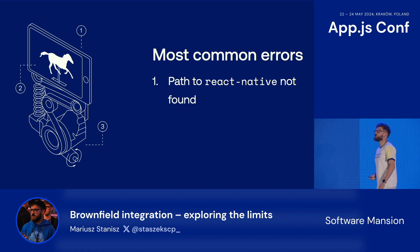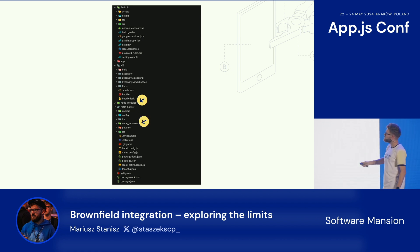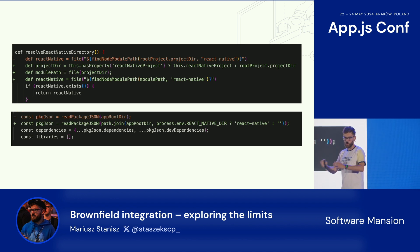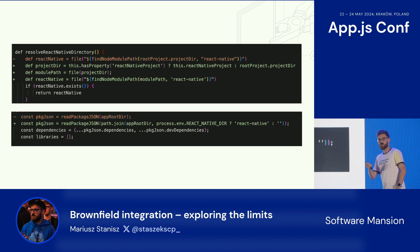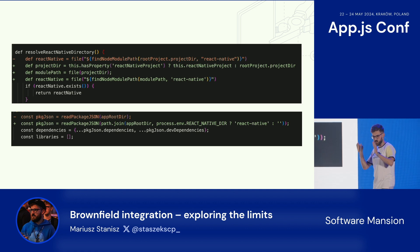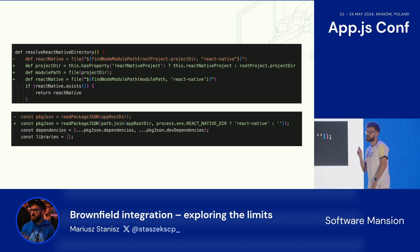The most common errors I bumped into: first, the path to React Native couldn't be found. That's because we used a monorepo structure and had two node_modules folders due to two package.json files. I ended up writing some patches to fix the code and point exactly to where the React Native module source code was. This is a tip for third-party library maintainers: please keep in mind that people use different project structures — not always a standard root-level package.json.